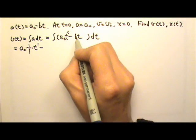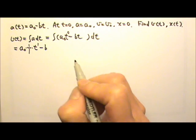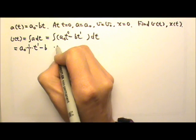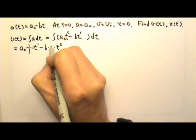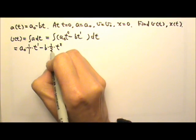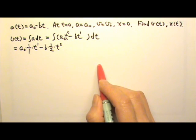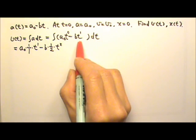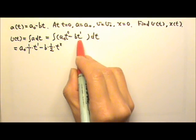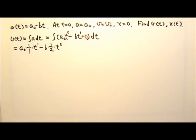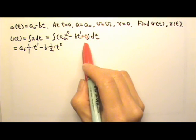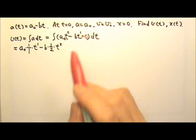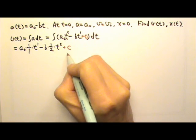For the second term, minus b is the constant coefficient. Since t is t to the first degree, integrating gives t to the second degree, and we multiply by 1 over 2. Now, a0 minus bt is also a0 minus bt plus 0, and when we integrate 0, we get a constant. Usually written as lowercase c, so we add plus c.